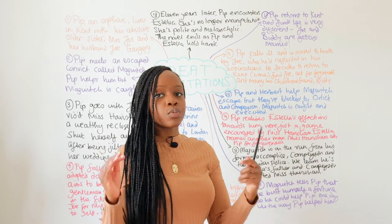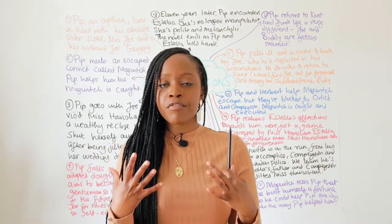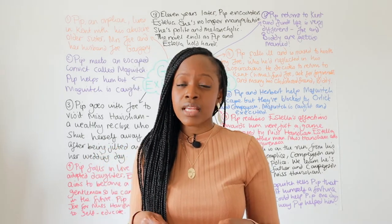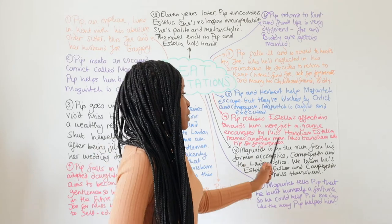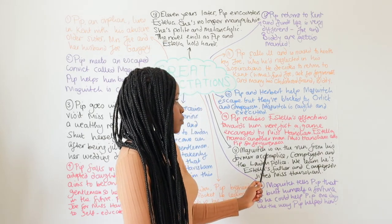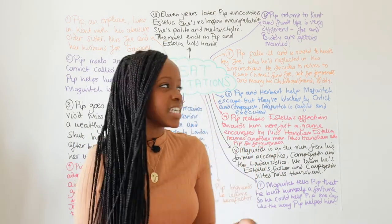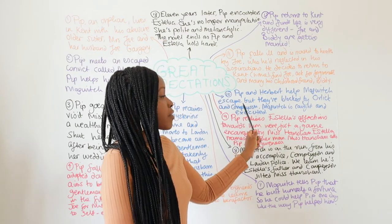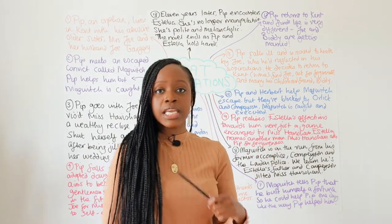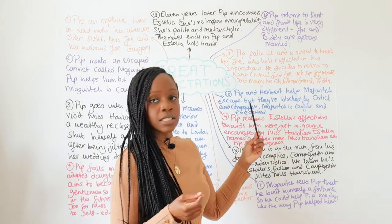Estella marries another man who's more alongside her own class. However, we find that Miss Havisham now feels very sad about how she mistreated Pip all those years ago, and also how she manipulated Estella — because Estella then became a really terrible individual. Miss Havisham feels really sad, she feels guilty, she's recriminatory, and she asks Pip for his forgiveness. Separately, we learn that Pip and Herbert help Magwitch escape, because don't forget he's on the run. However, they are blocked and obstructed by Orlick and Compeyson, and Magwitch is unfortunately caught. This is one of the tragic elements of this story — he is unfortunately caught and executed, so he meets his bloody end.